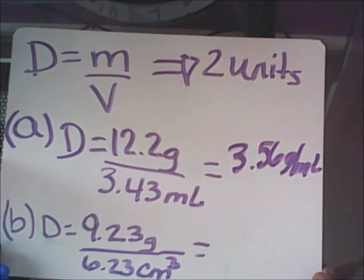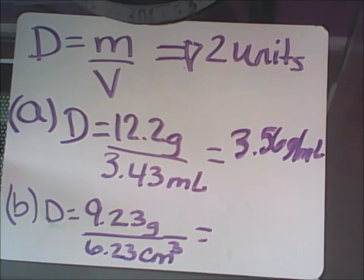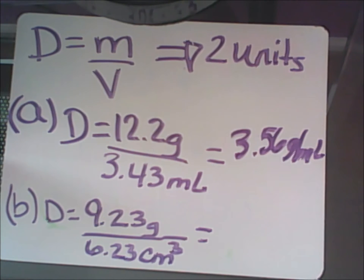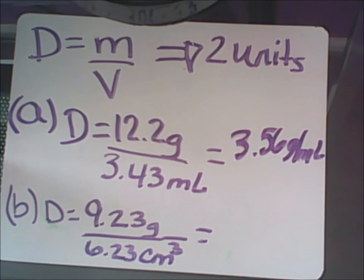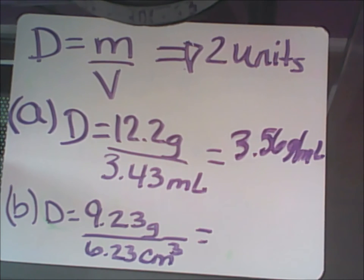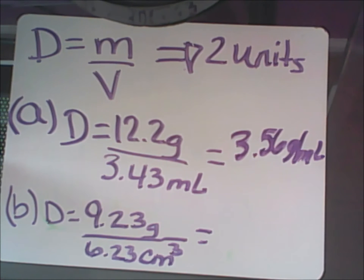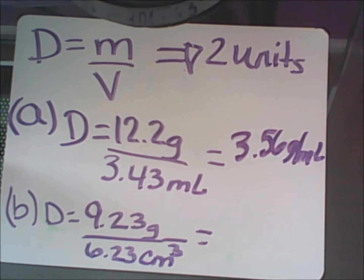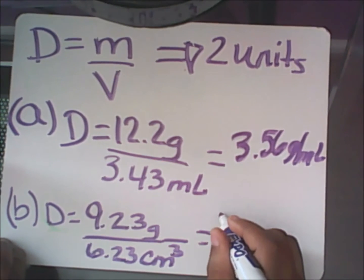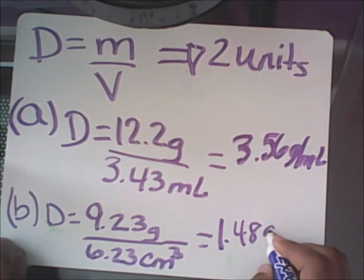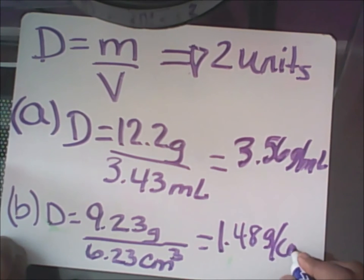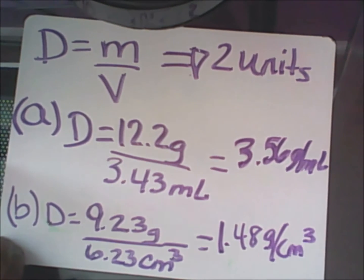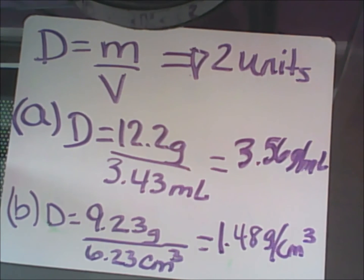The next example: d equals mass over volume again. 9.23 grams divided by 6.23 cubic centimeters. Again, I must incorporate the proper significant digits. Therefore, my final answer should be recorded as 1.48 grams per centimeters cubed or cubic centimeters.